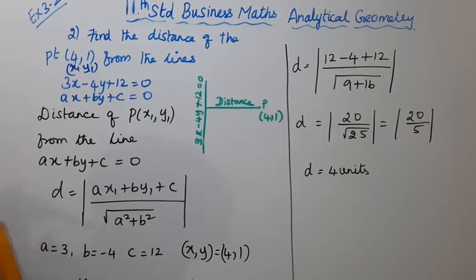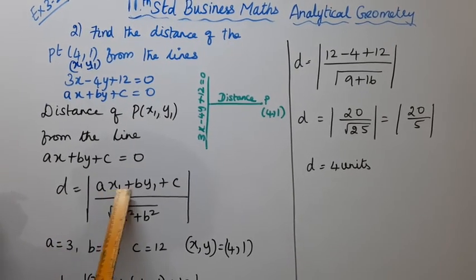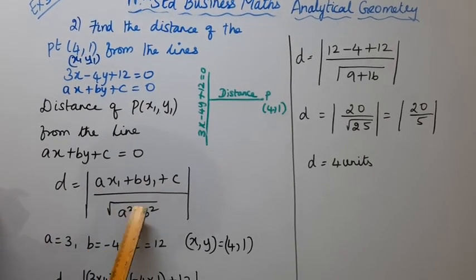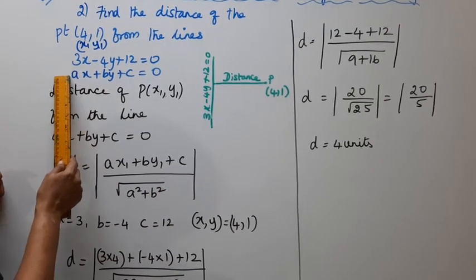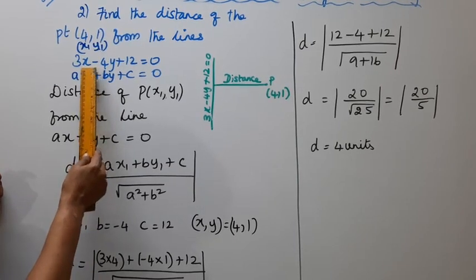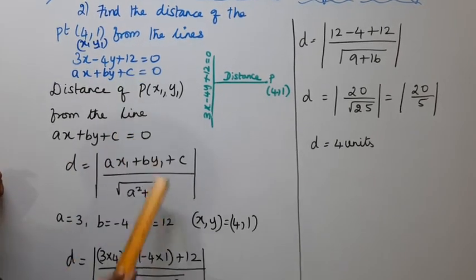So formula is d equal to modulus of ax1 plus by1 plus c divided by root of a squared plus b squared. a is the coefficient of x, a is 3. b is minus 4, c is 12.